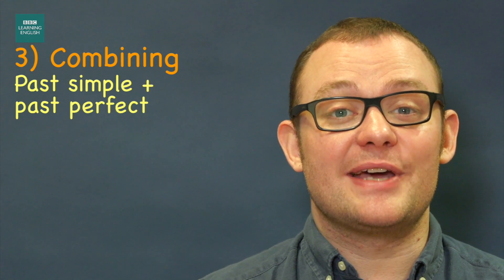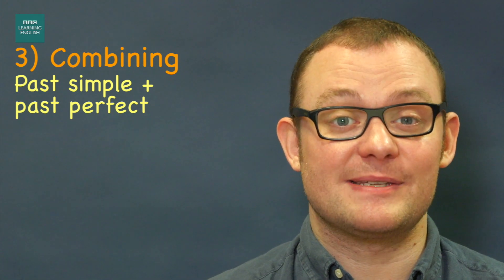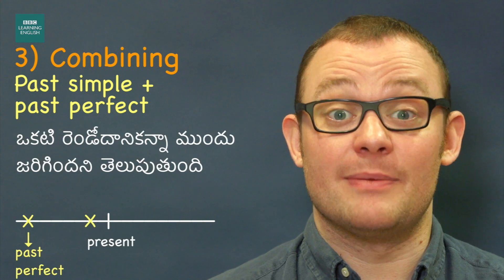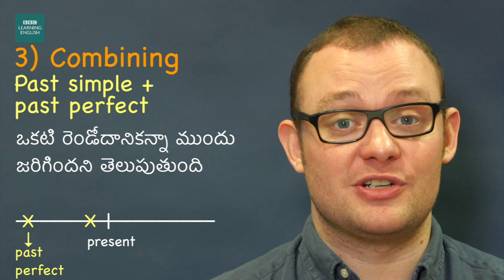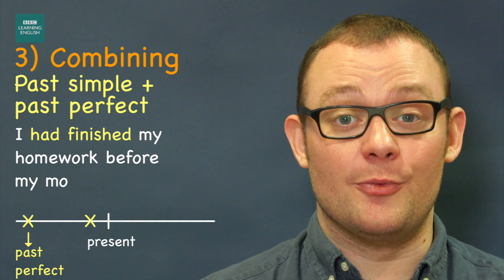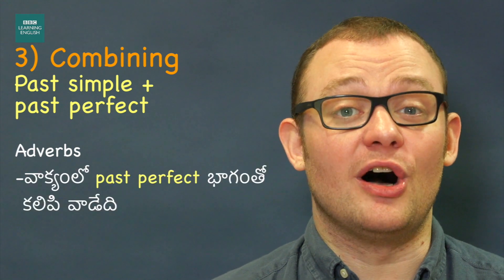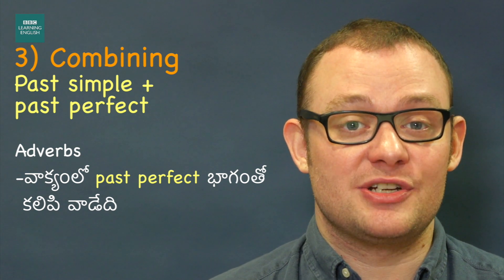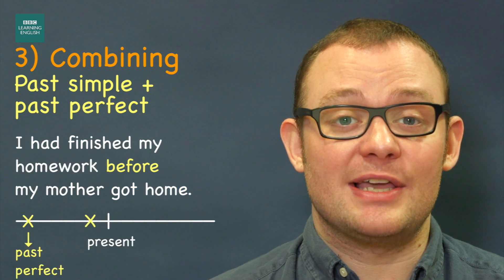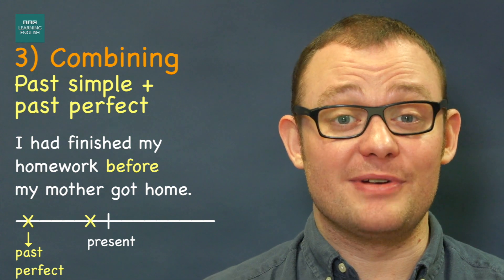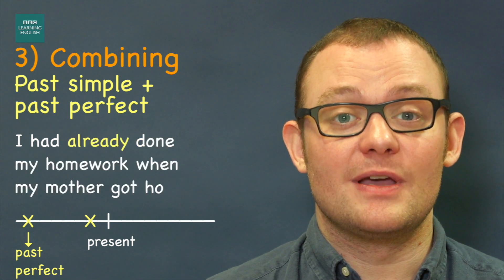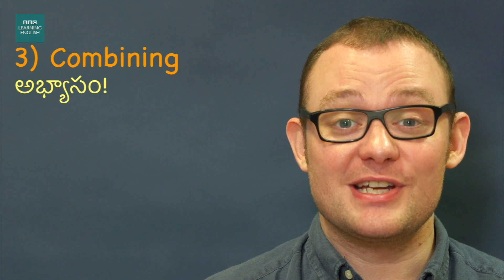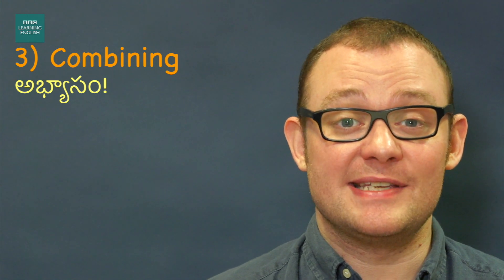Finally, let's look at combining past simple and past perfect sentences. The past perfect is often used with a past simple sentence to show that one action happened before the other. For example: I had finished my homework before my mother got home. Adverbs like before and already are often used with the past perfect to emphasise that this action happened first — for example: I had already done my homework when my mother got home.